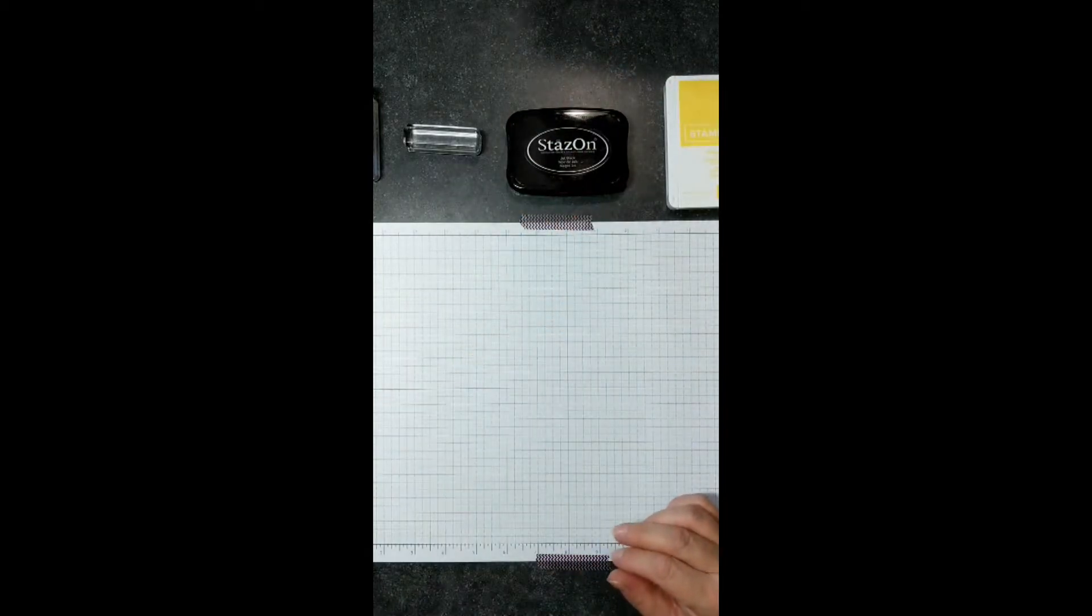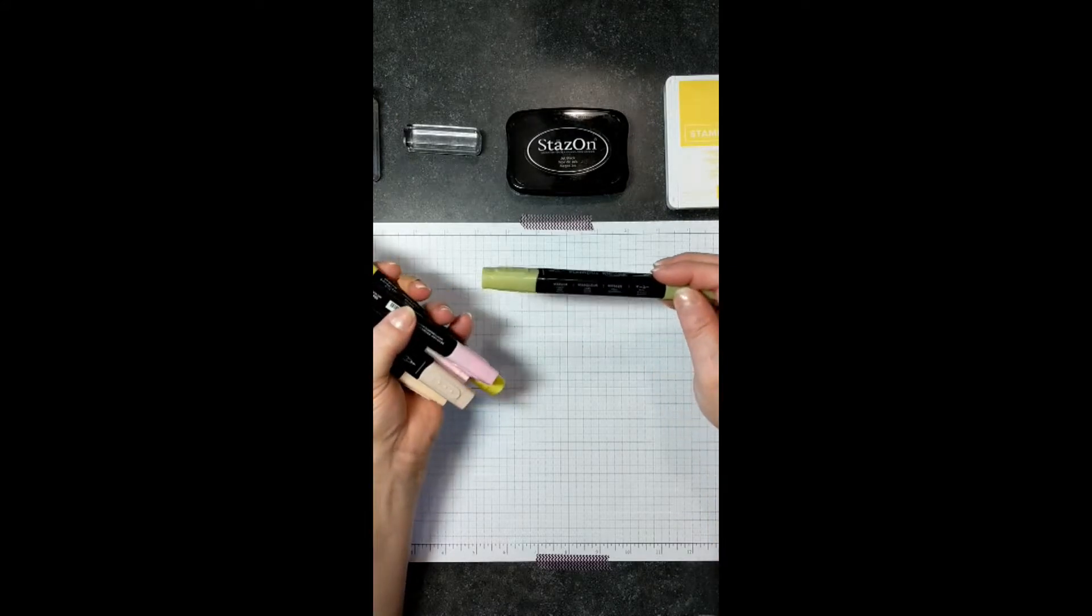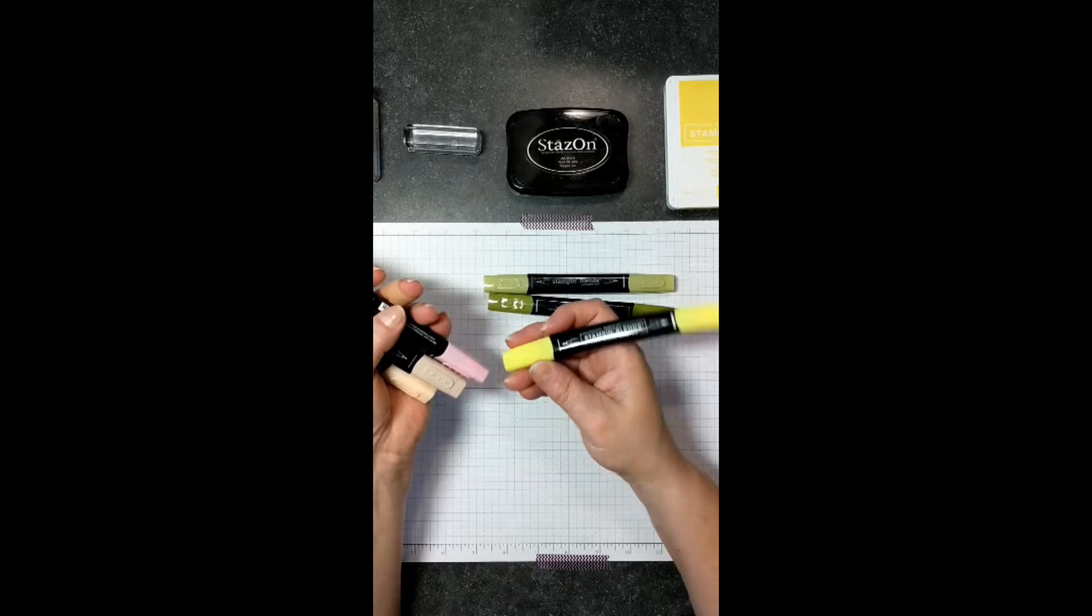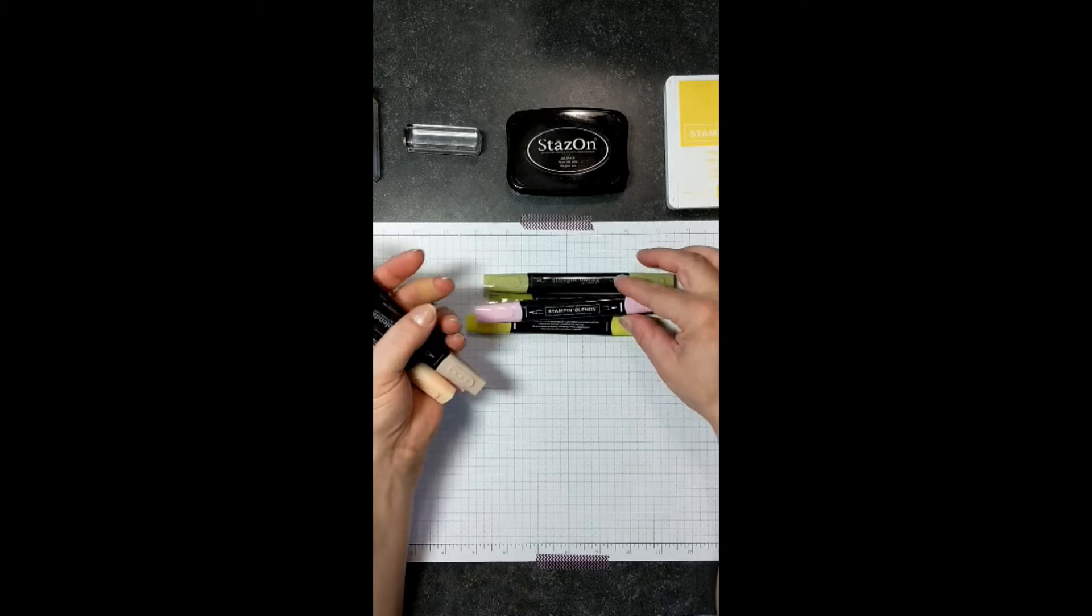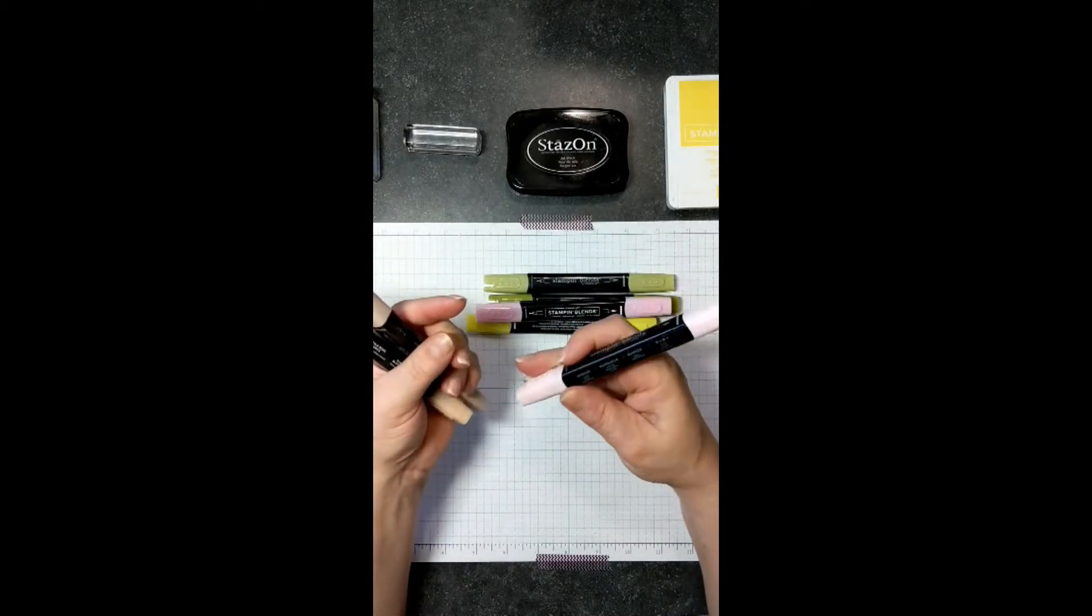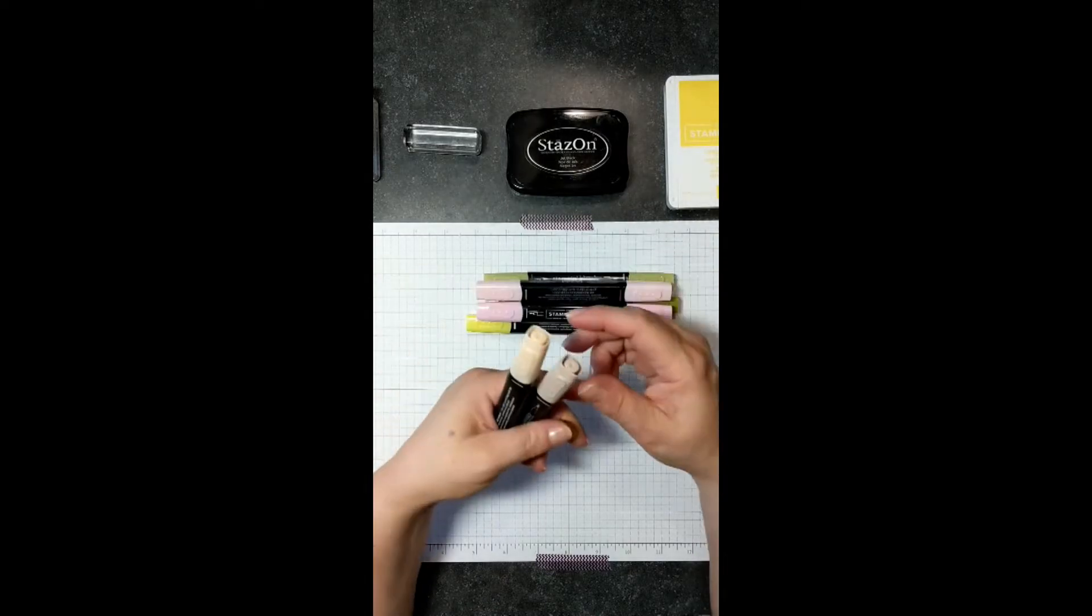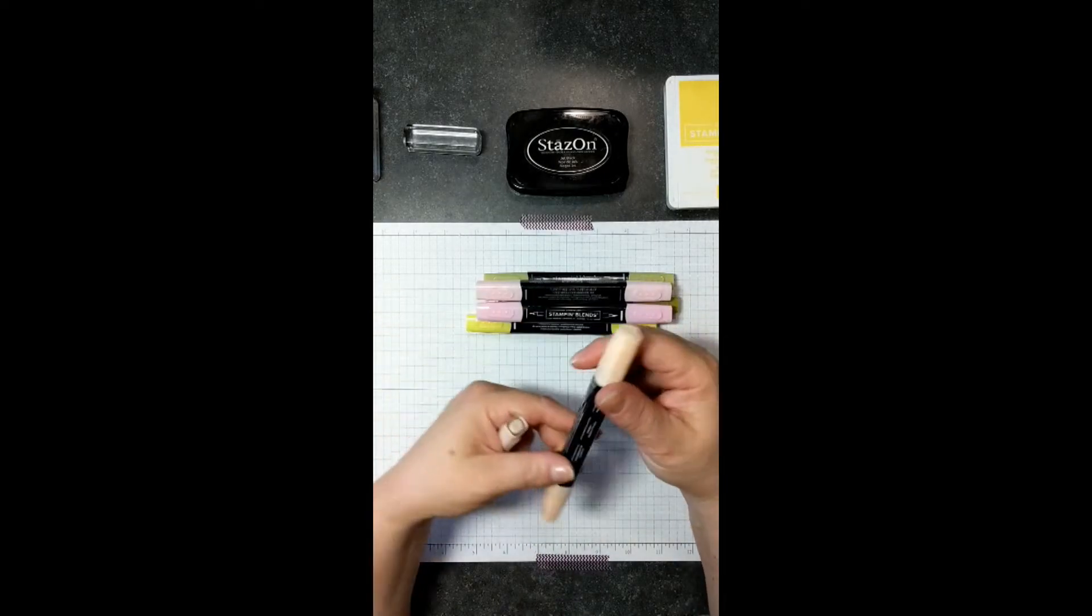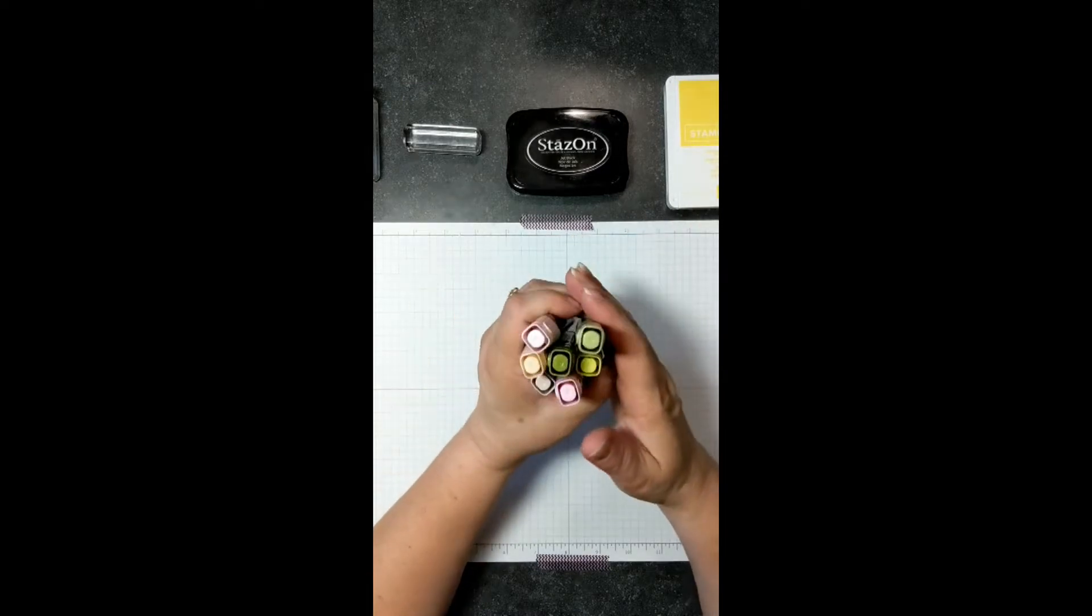And then some blends, Stampin' Blend pens, and I have a few out here. I have got my Light Old Olive and then Dark Old Olive, and then I have the Dark Pineapple Punch, and then I have the Light Flirty Flamingo, and I have the Light Pink Pirouette, Ivory, and Dark Petal Pink. Those are the colors that we're going to be using for some of our coloring.